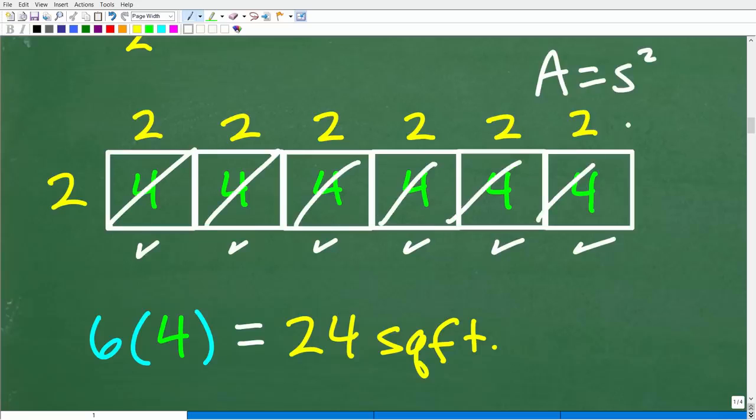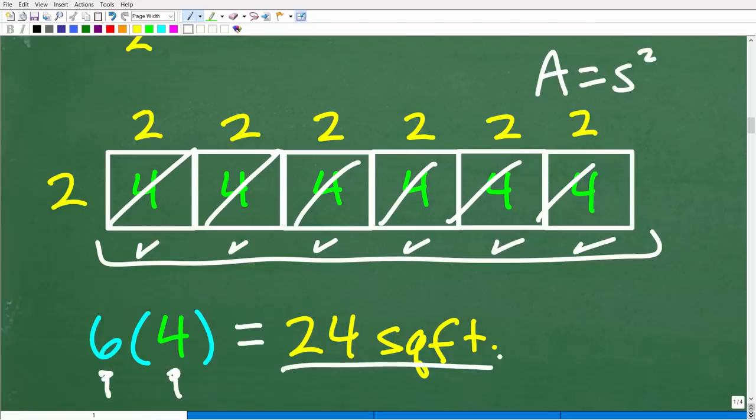So the total square feet required to construct our little cube here, two-foot by two-foot cube, is going to be six of these. We need six at four square feet. So six times four is 24 square feet.